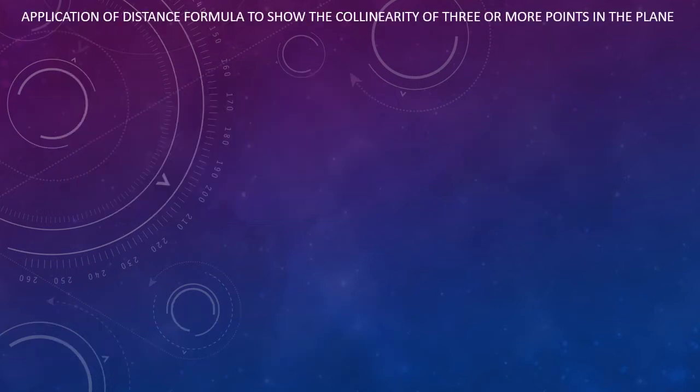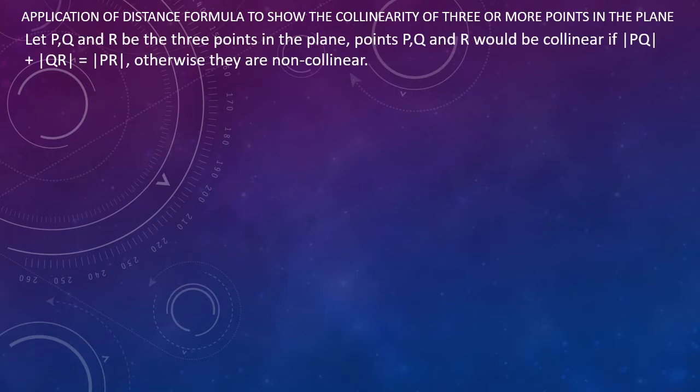Now let us see how to apply the distance formula to show the collinearity of three or more points in the plane. Let P, Q and R be three points in the plane. Points P, Q and R would be collinear if the distance PQ plus the distance QR is equal to the distance PR. Otherwise they are non-collinear.